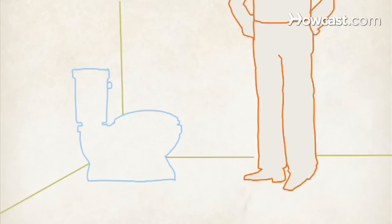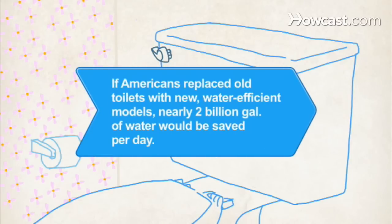Now your bathroom is leak-free. Did you know? According to the EPA, if Americans replaced old toilets with new, water-efficient models, it could save nearly 2 billion gallons of water per day.